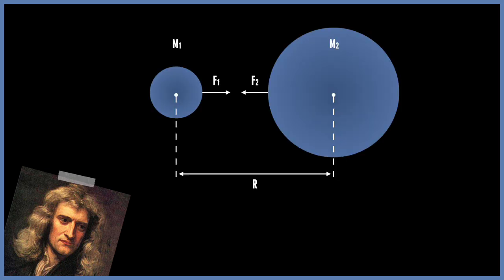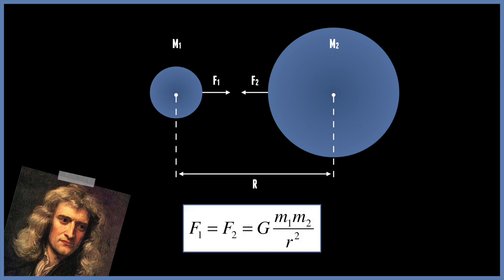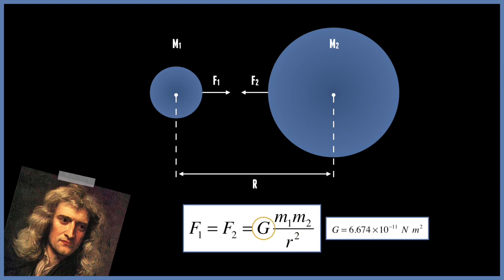Isaac Newton's universal gravitational law states that two bodies can be expressed mathematically as a formula of a force, where F is the force, M1 and M2 are the masses of the objects interacting, and R is the distance between the centres of the objects. There is also a gravitational constant.